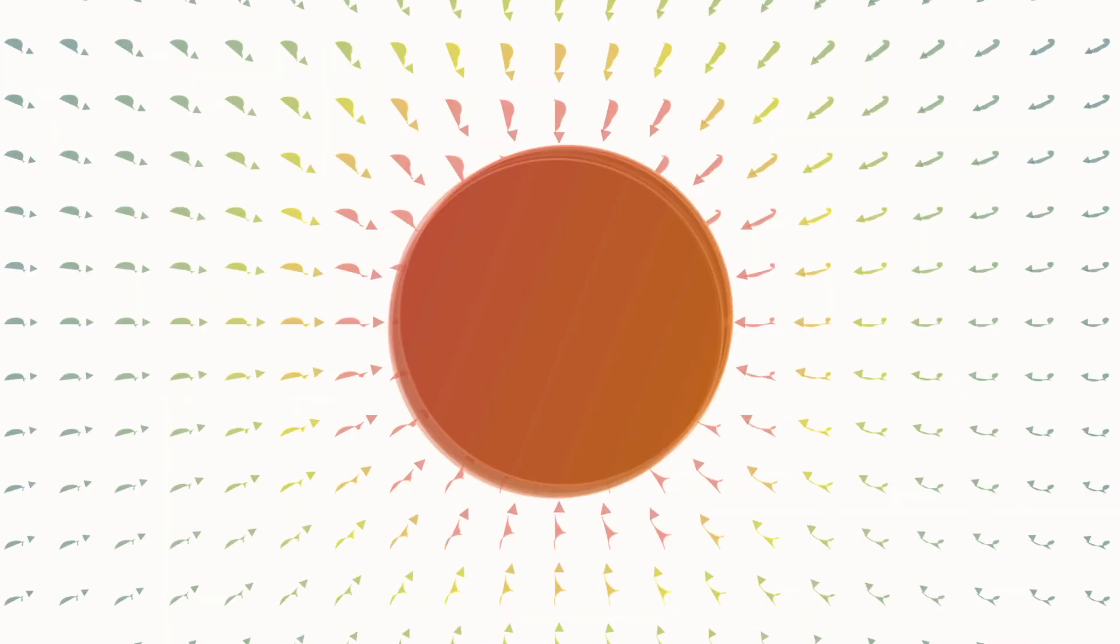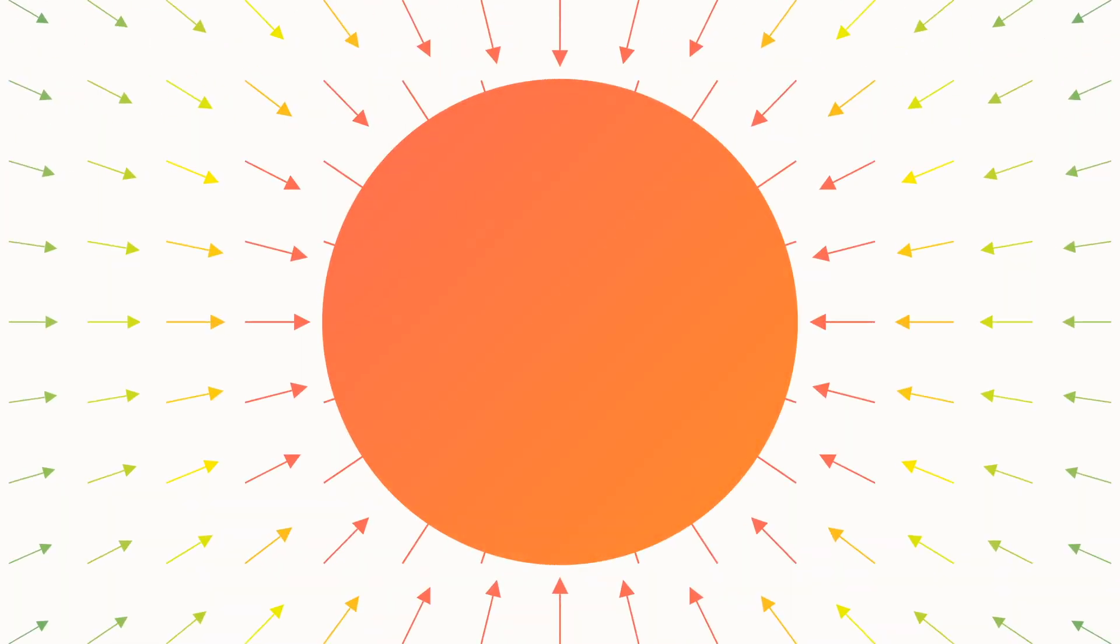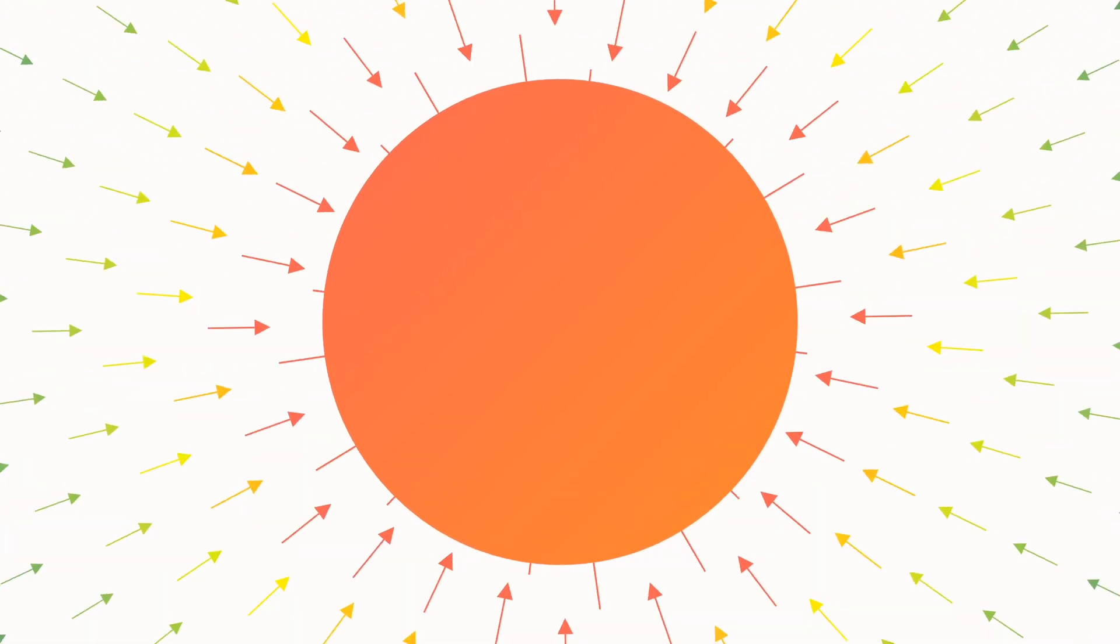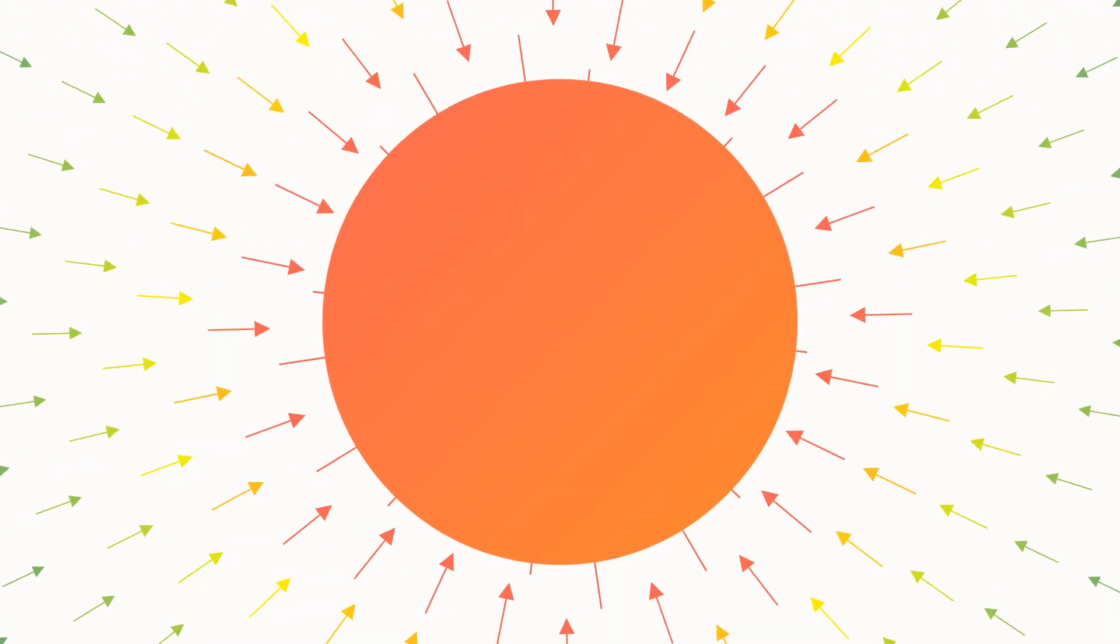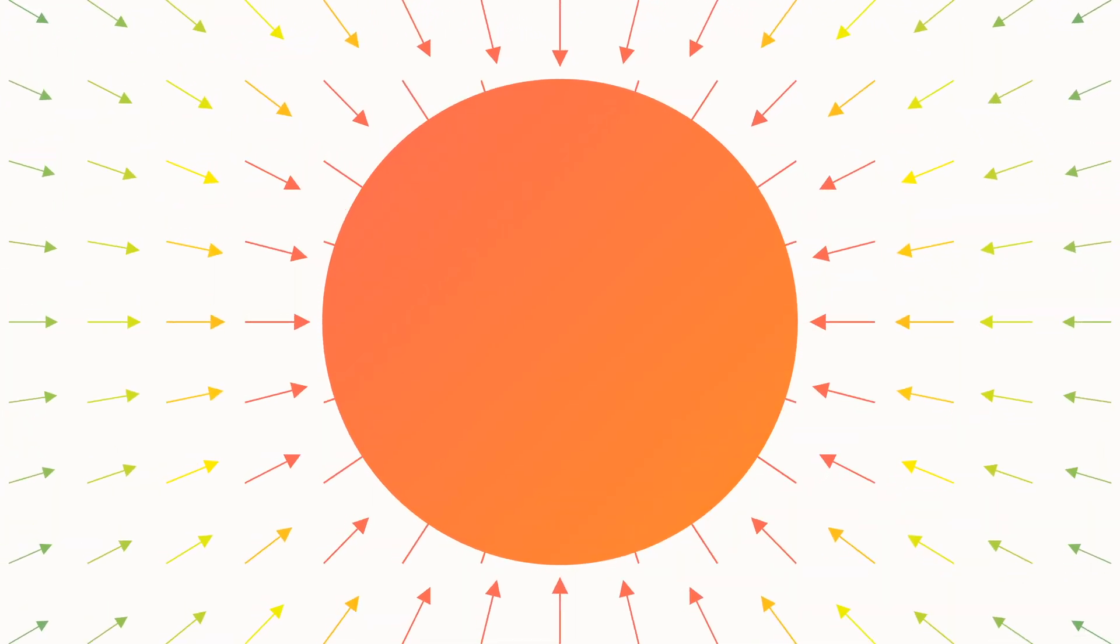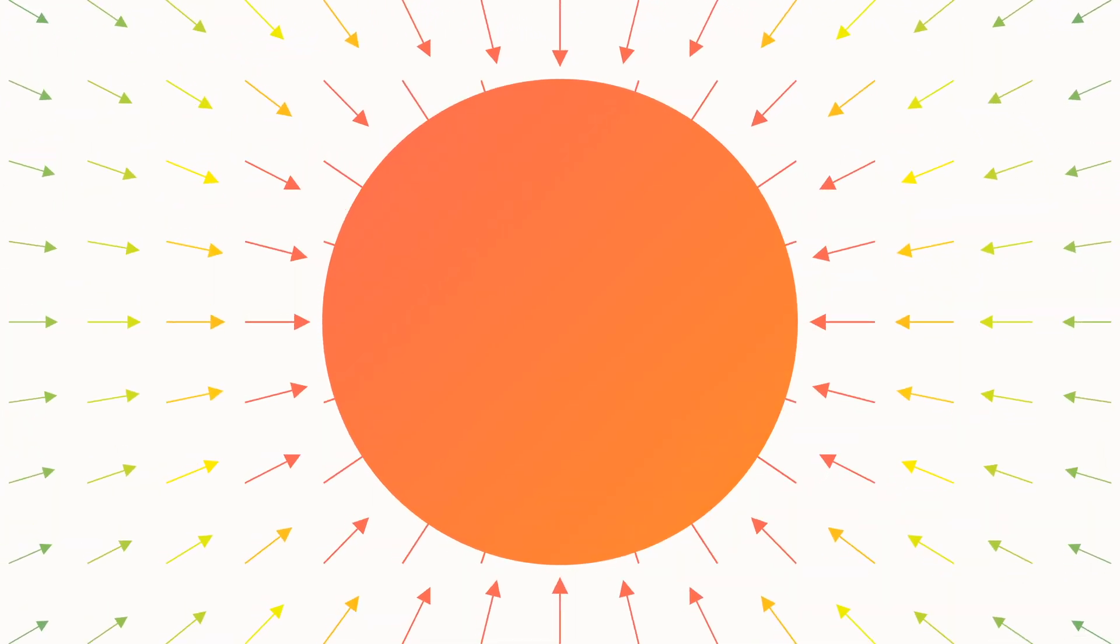So not only can we turn this one sphere into two, we could even turn a small pebble into a star by repeatedly applying this process. Of course, only in an abstract way. Since the process necessarily involves objects with no conceivable volume, the Banach-Tarski paradox cannot possibly apply to the real world.